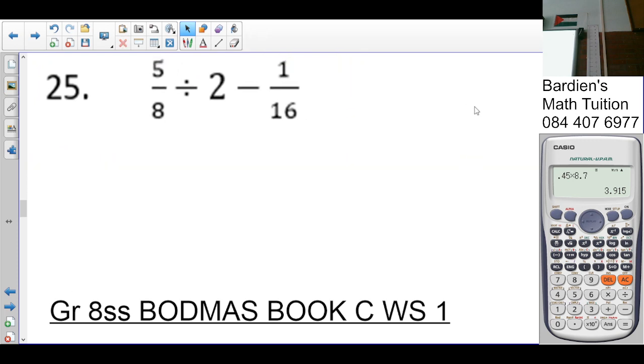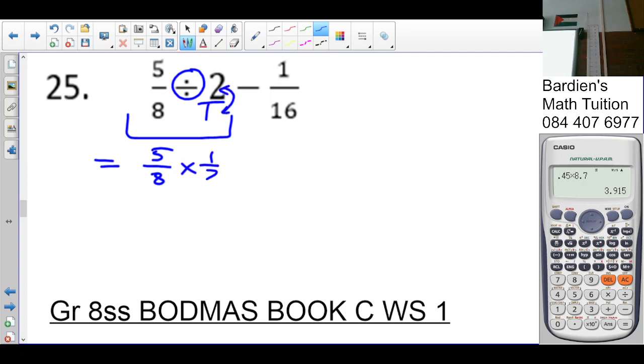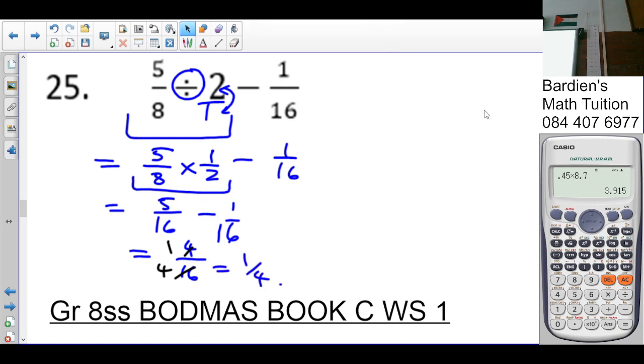What needs to be done first then? Division. So that's naturally over one. I'm going to change that to multiplication. Four going into four once. Four going into sixteen four times. The answer is one over four.